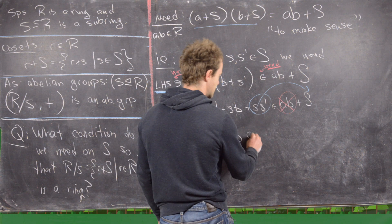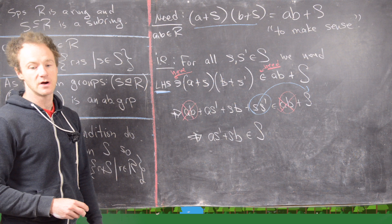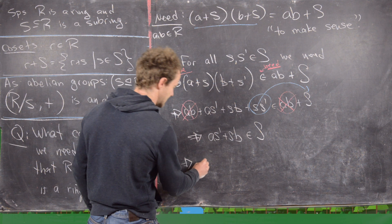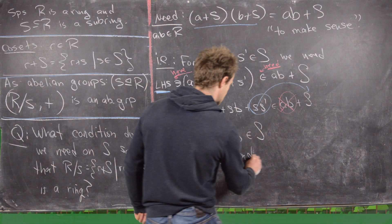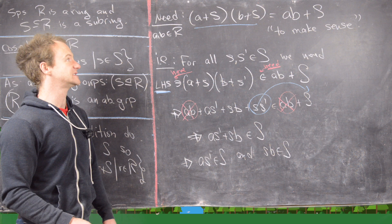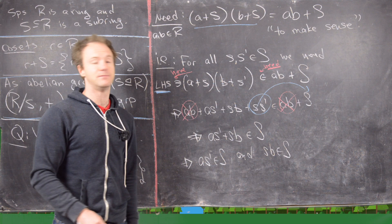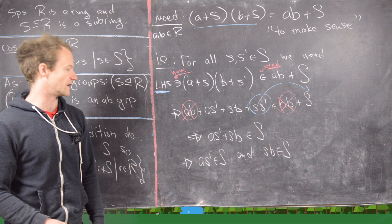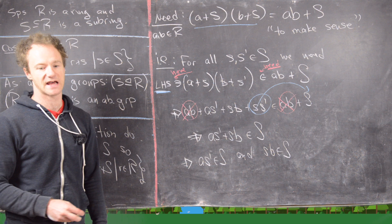What would it take for A·s′ + s·B to always be in S? We need A·s′ to be an element from S and s·B to be an element from S, because this must hold for all A and B in the ring R and all s and s′ in the subring S. So the only way for that to be the case is for these two inclusions to hold.